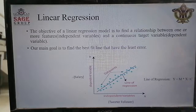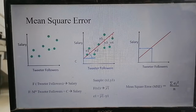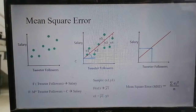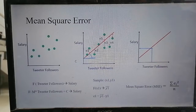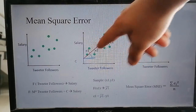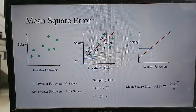Through the training samples we learn the correct values of m and c. Mean square error represents the error of any line or any function. On the x-axis is the tutor follower and y-axis is the salary, and these are the samples. Initially we don't know the correct values of the model parameters m and c, so we initialize the values randomly. Let's say we have initialized the values and we get the line shown in red.